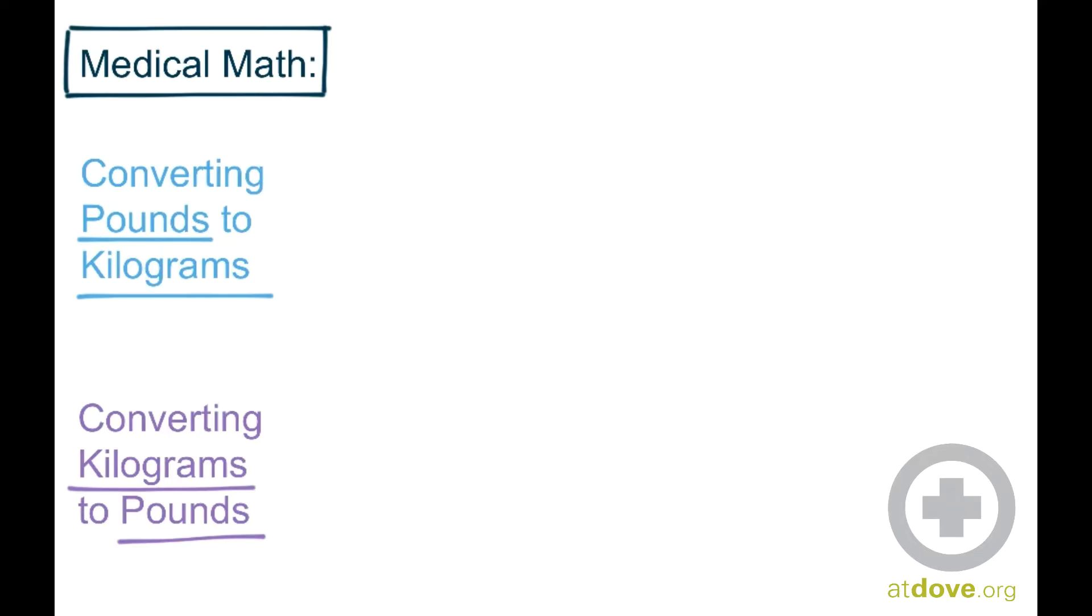And the one thing you need to know to do this formula is that one kilogram is the equivalent of 2.2 pounds. And I tend to use LB as a symbol for pounds, but some people will occasionally do this pound sign, so you may see that around as well.